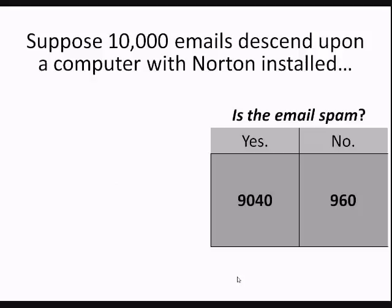What we did in the project — rather than attacking the formulaic approach of using Bayes — is say: let's suppose 10,000 emails attempt to get into your inbox. Using the numbers from Symantec, 90.4% of them are going to be spam. So of those 10,000, I've split them into two disjoint categories in a contingency table: 9,040 are spam and 960 are legitimate emails.